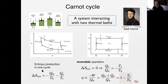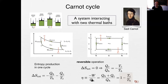ΔS_tot = −Q_h/T_h − Q_c/T_c. If you do the cycle very slowly it's reversible, so total entropy production is zero, which means the ratio between the heat fluxes is related to the temperatures. Carnot wanted the efficiency: work output divided by heat intake from the hot bath. Using the equation, the efficiency equals 1 − T_c/T_h, independent of the engine details — depending only on the bath temperatures. This is the Carnot efficiency.